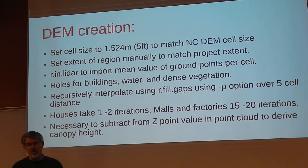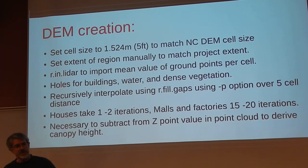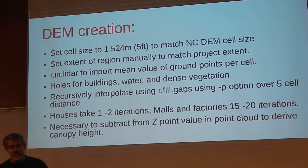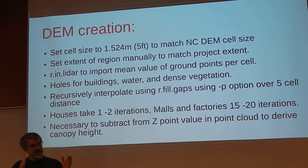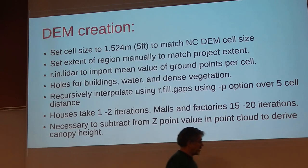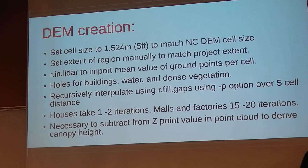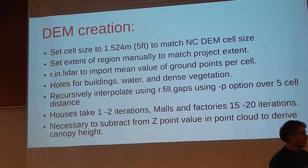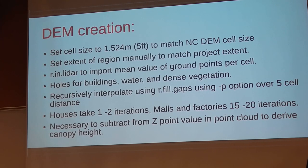That leaves holes for buildings, data voids in swampy areas, and other wet areas. So I used a new plugin for GRASS called r.fill.gaps, which very quickly allows you to do IDW interpolation between gaps. You can give it the distance. I used a very small distance so that if you have a hole for a building and you say it's a big building and set 50 cells, but there's a big hill nearby, it's going to interpolate down and put a big hole underneath your building. So I just did bare cells and did it recursively.